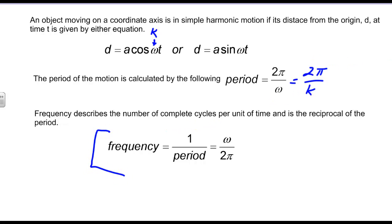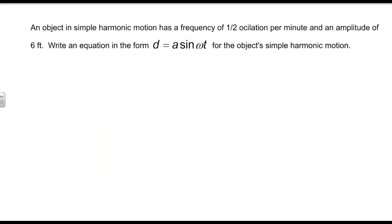So, if we take and talk about a problem like this, you've got an object in simple harmonic motion, it's got a frequency of a half oscillation per minute, and an amplitude of 6 feet, and we want to describe this motion using d equals A sine omega t. We want to write that equation.